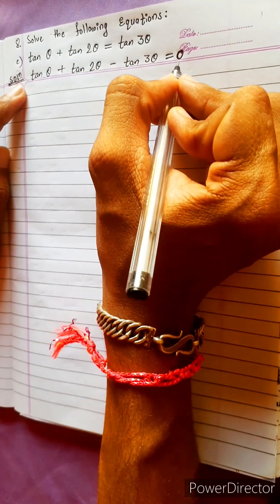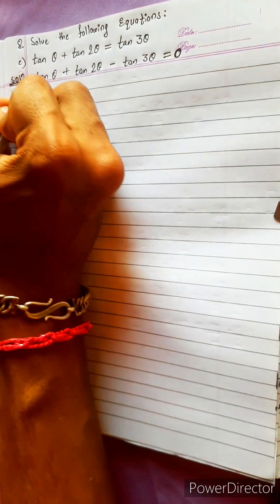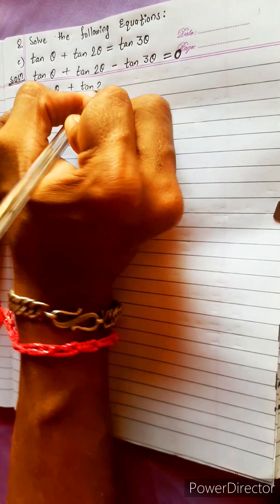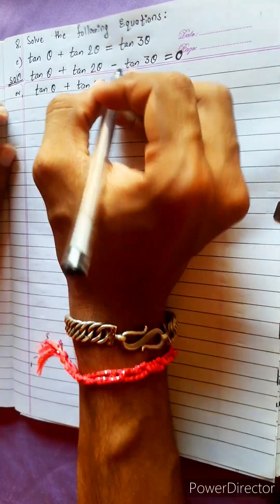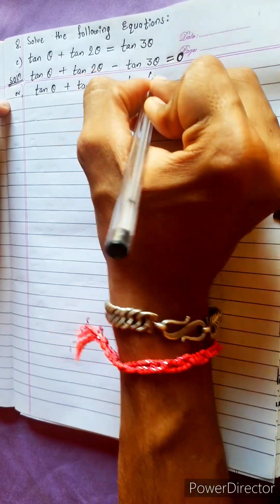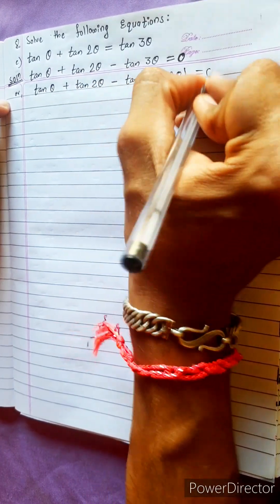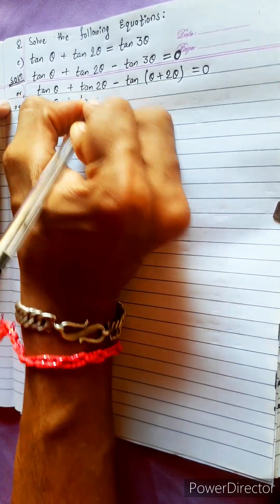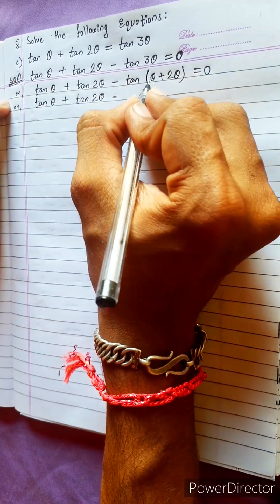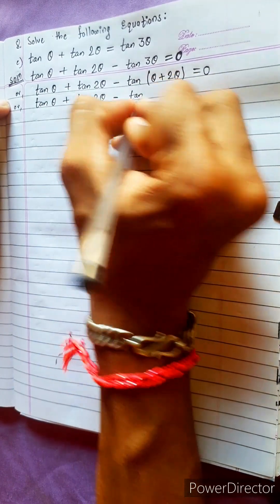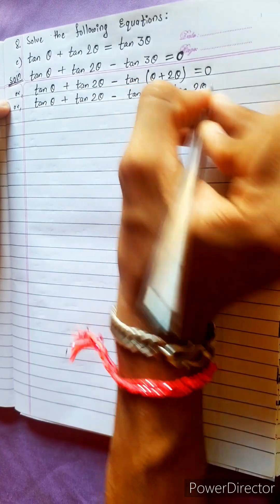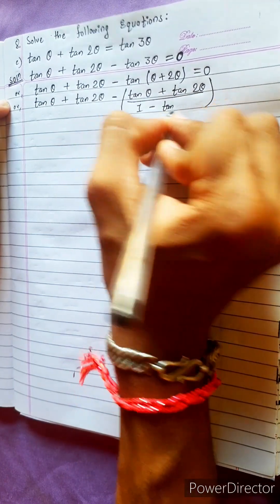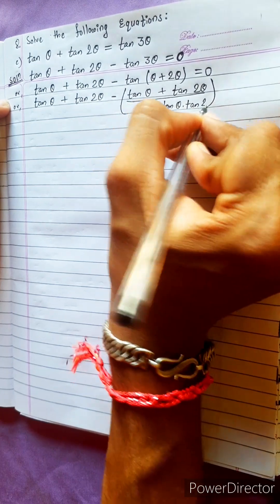If we bring it equal to 0, it will be easy for us to apply either/or. Now don't touch tan θ + tan 2θ — leave it as it is. For tan 3θ, that means tan(θ + 2θ), so use the tan(a+b) formula: tan(a+b) = (tan a + tan b) / (1 - tan a · tan b).